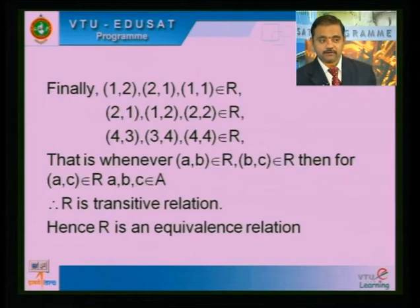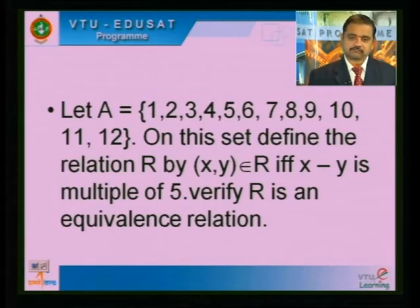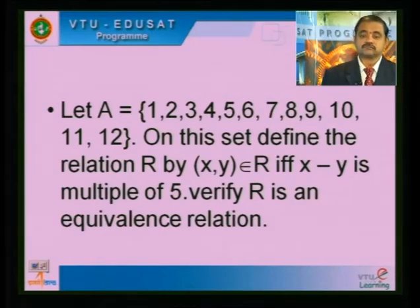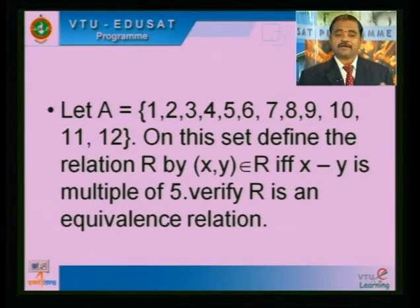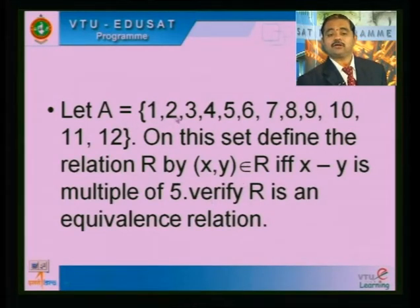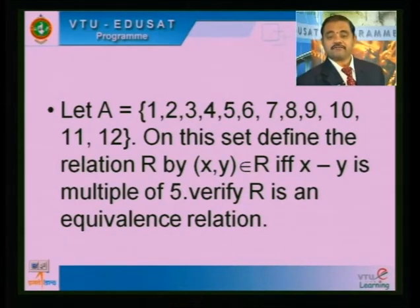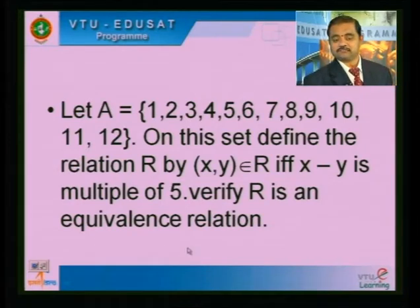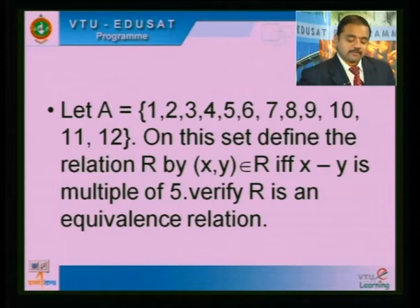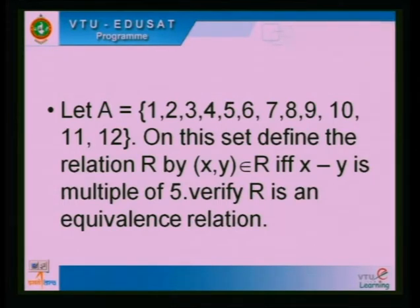We got reflexive, symmetric, and transitive. Hence R is an equivalence relation. If any one of the properties does not occur, then we cannot say it is an equivalence relation. Now let A = {1,2,3,...,12} and define a relation R by: (x,y) belongs to R if and only if x minus y is a multiple of 5. Verify R is an equivalence relation.